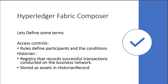Another term you want to know is historian. This is an interesting term — if you didn't read the documentation or play around with Composer and Fabric, you probably wouldn't know what it is. It's basically a registry that records successful transactions that happen on the network. It also records all the participants and identities that participate in that transaction, and it stores that in the historian record assets transaction file.